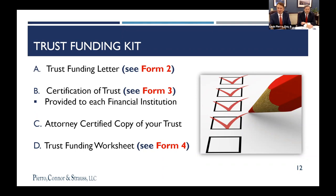The letter talks about how each asset — bank accounts, brokerage accounts, real estate, business interests, annuities, life insurance — how each type of asset gets retitled and put into the trust from a funding perspective. That's Form Number Two, the trust funding letter.